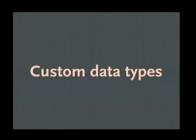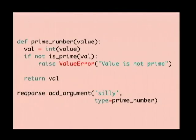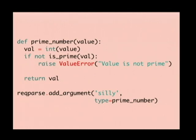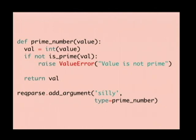We also have custom data types for both input validation and output formatting. This is a contrived example of only wanting prime numbers for a field. All the function has to do is basically behave like Python's built-in type coercion functions — do whatever you want to coerce and validate it, and make sure it obeys whatever extra logic you want. In this case, we have a prime-testing function, and if the value is not prime, we throw a value error; otherwise we return the parsed and validated value. This function combines both the input validation step and the parsing step — it should either return the value or throw an error. Then we can use it just like anything else: take our parser and add the argument using our new function as the value for the type keyword argument.